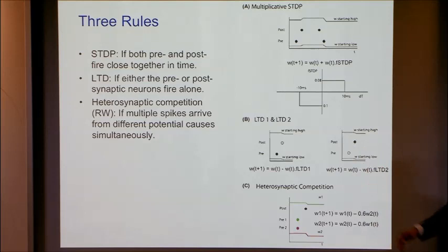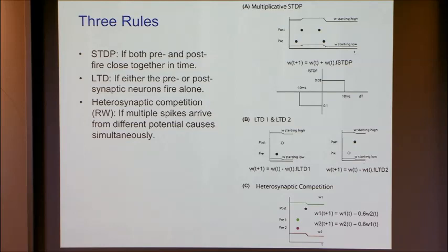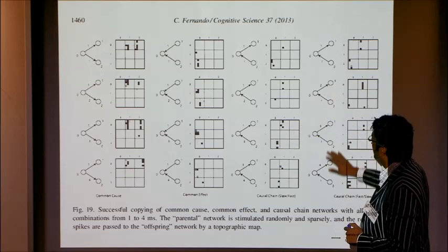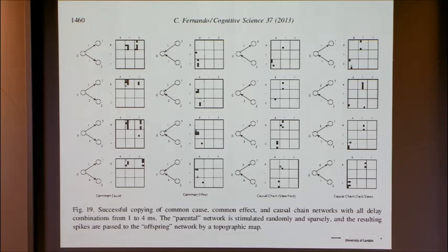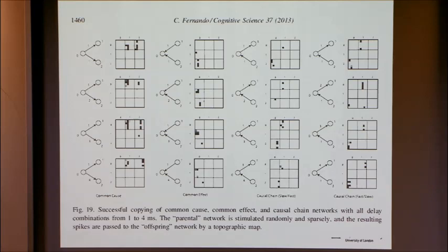We have a mechanism with three plasticity rules that can infer causal networks. The rules are spike-time-dependent plasticity — which is multiplicative, the same multiplicative nature we were looking at earlier — plus rules that reduce weight when there's a postsynaptic spike and no presynaptic spike, or vice versa. There's also something that implements the Rescorla-Wagner rule through heterosynaptic competition. If we implement these plasticity rules, we can copy all possible structures of a three-node system, generalizing to larger systems if activity spread is controlled.